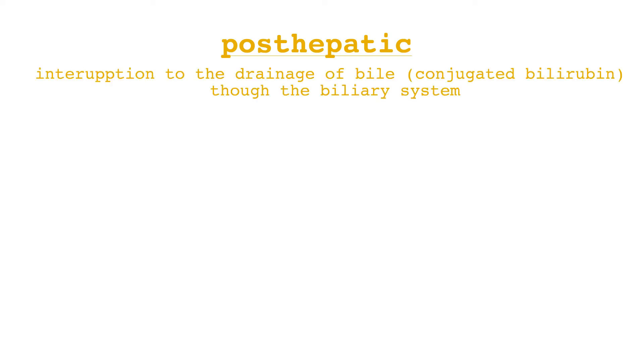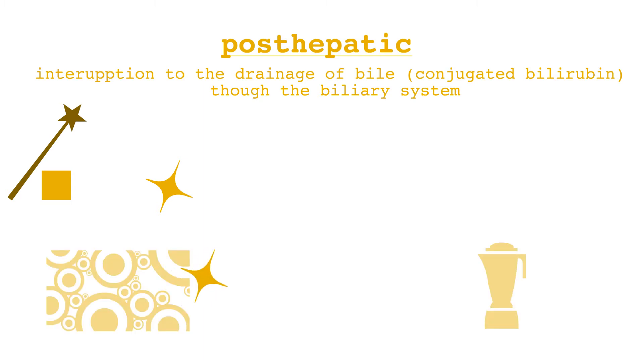Post-hepatic jaundice is caused by an interruption to the drainage of bile containing conjugated bilirubin in the biliary system. The rate of bilirubin formation and conjugation is normal, but conjugated bilirubin can't pass from blood into the intestines due to the obstruction. Therefore, the accumulated bilirubin in the blood is conjugated bilirubin. Another clinically relevant way to classify jaundice is painful and painless, but this will not be discussed in this video.